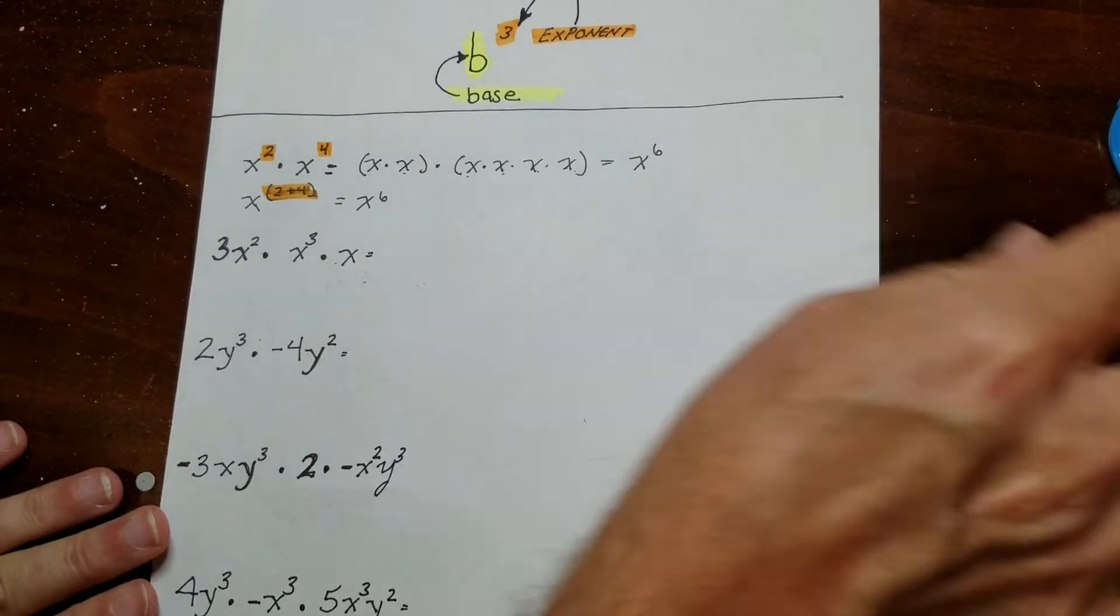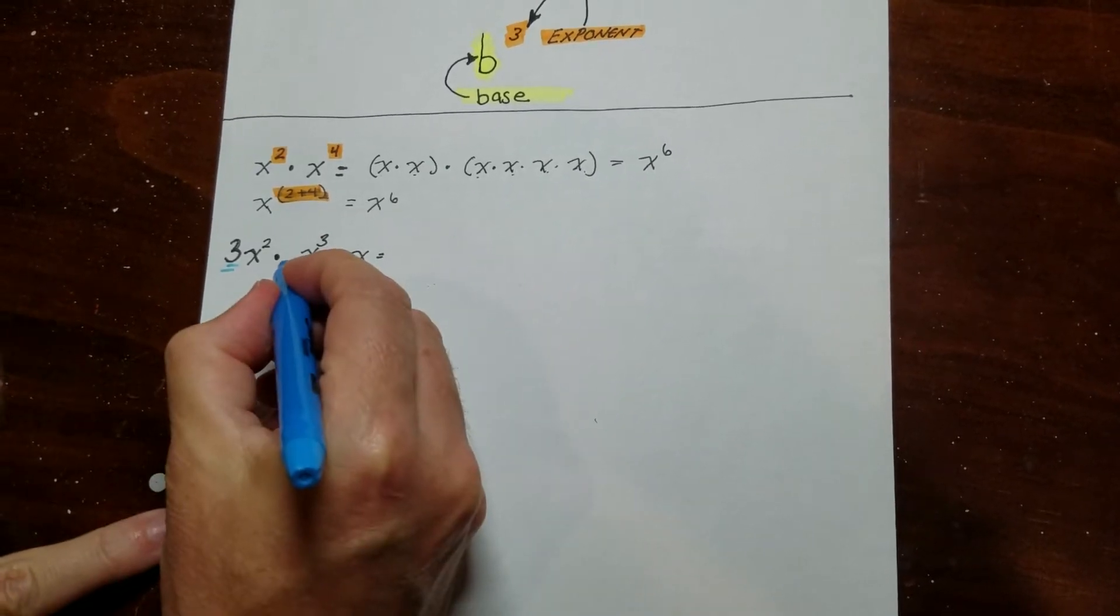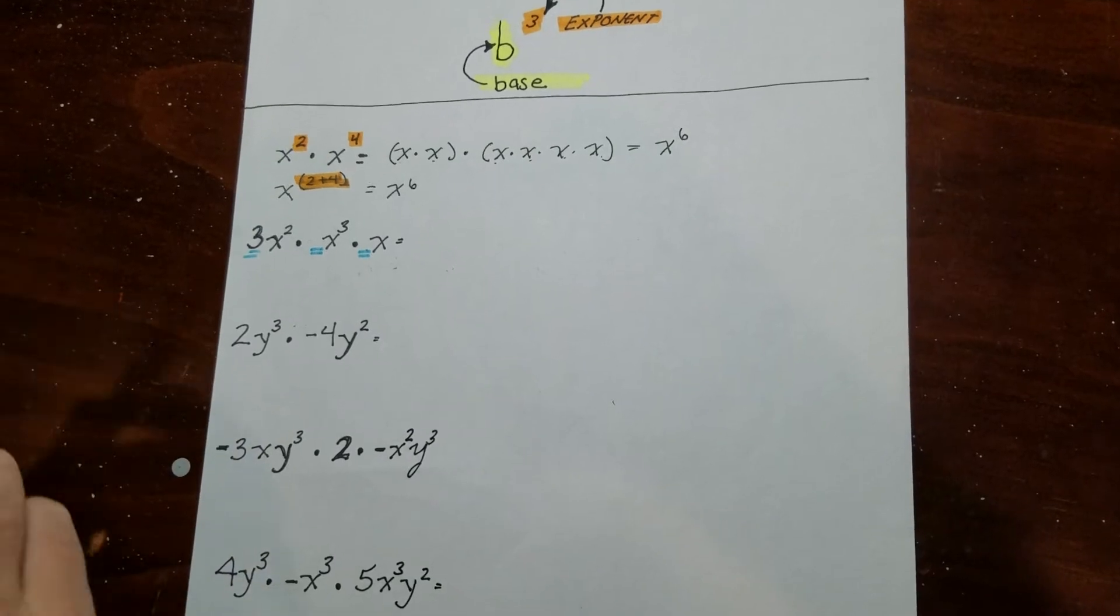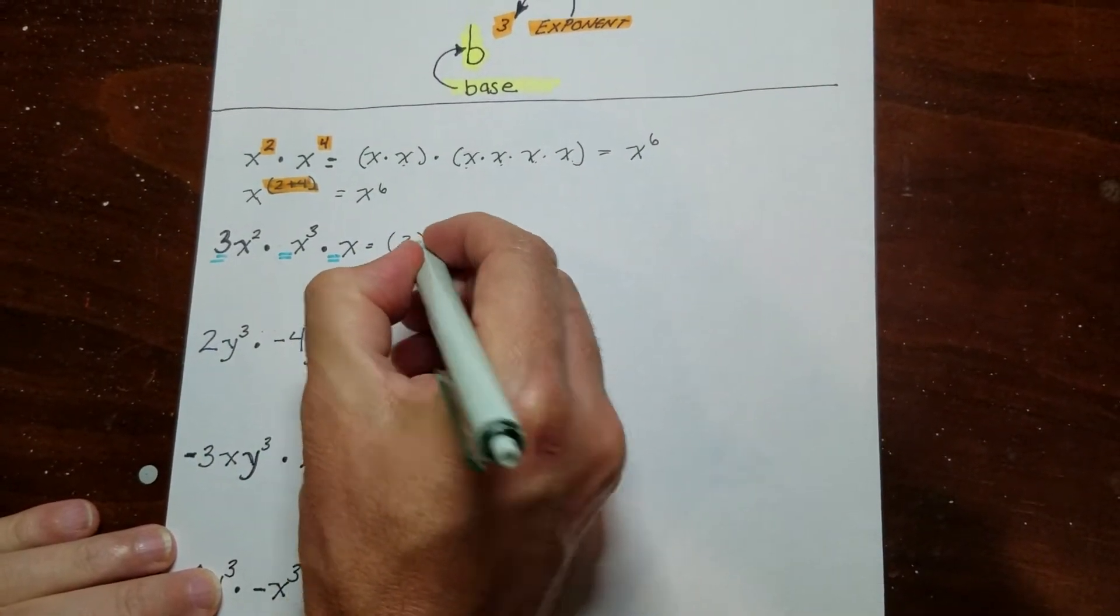Now, this has a coefficient of 3. So these don't have anything out in front, but that basically means that they have a 1. So I'm going to go ahead and take the 3 and put it by itself in a group.